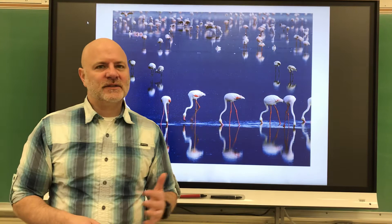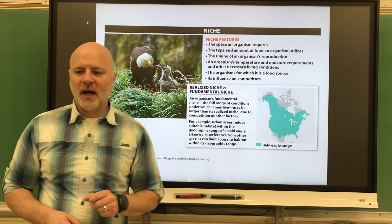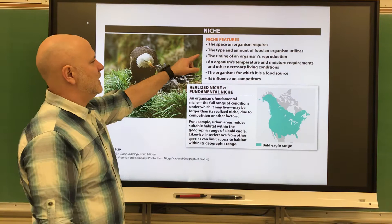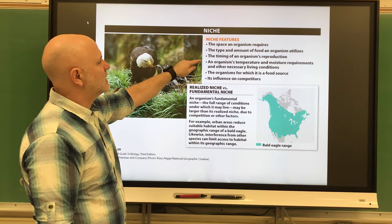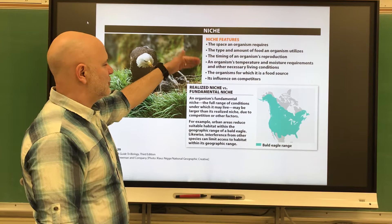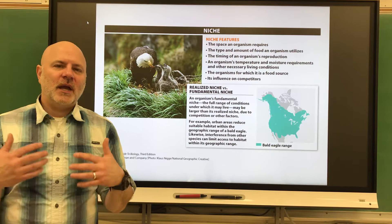The first thing we're going to talk about is a niche. A niche is the role an organism plays in the environment. Some niche features include the space the organism requires, the type and amount of food that organism utilizes, the timing of an organism's reproduction, and the organism's temperature and moisture requirements. There are a lot of things that go into the niche — it encompasses everything about that organism and what it does in the environment.